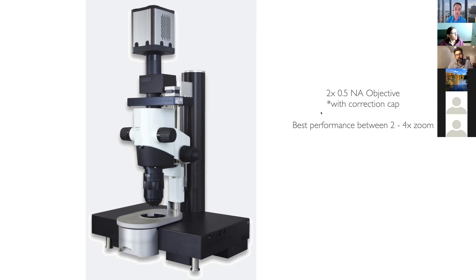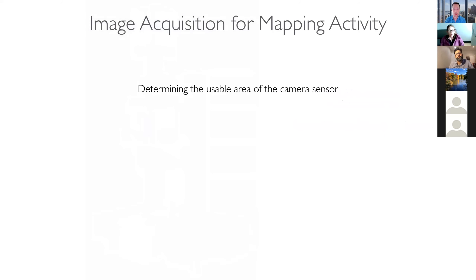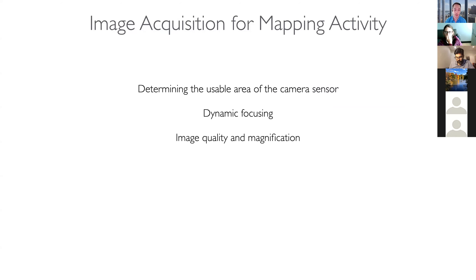At the Zuckerman Institute we have one of these UltraMicroscope II light sheet microscopes, used by a lot of the whole-brain imaging groups — the same type used in the Cell paper. We have a 2x objective with a correction cap, which gives very little distortion and works best between 2x and 4x zoom. Before getting into the ClearMap pipeline, I want to briefly touch on how to get a good image for mapping: how much of the camera sensor to use, whether to use dynamic focusing, image quality considerations, magnification, and how to save time during acquisitions.